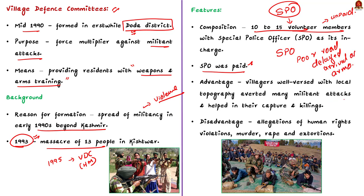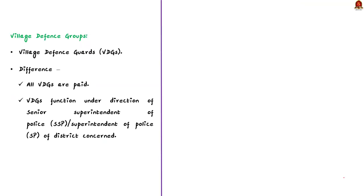Initially, the village defense committees proved successful, but they were not without issues. There were allegations of crime including abduction and rape by members, and allegations of human rights violations. Over time, the number of members dropped significantly and they ceased to exist due to lack of government support. But due to an increase in targeted killings in Jammu and Kashmir, the government has felt the need to arm civilians again.